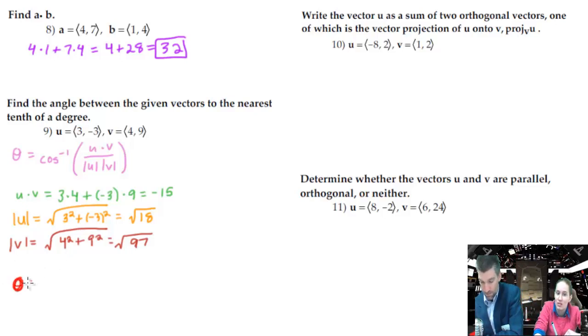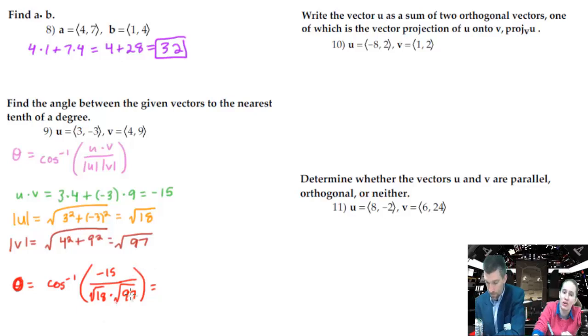Then arc cosine of negative 15 over... Now, there's a couple different ways you can do this to make sure you do it right. One is putting parentheses on the bottom. Or your calculator may do fractions for you. Or, if you want to be super lazy, you can actually put 18 and 97 underneath the same square root multiplied together. Then you won't have to worry about parentheses. Take that back. You're speaking witchcraft.